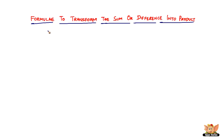In this video we're going to learn the formulae to transform the sum or difference into product. In the last video we were transforming the product into its sum or difference of sines and cosines, but here we're going to do the reverse — transforming the sum or difference into products.